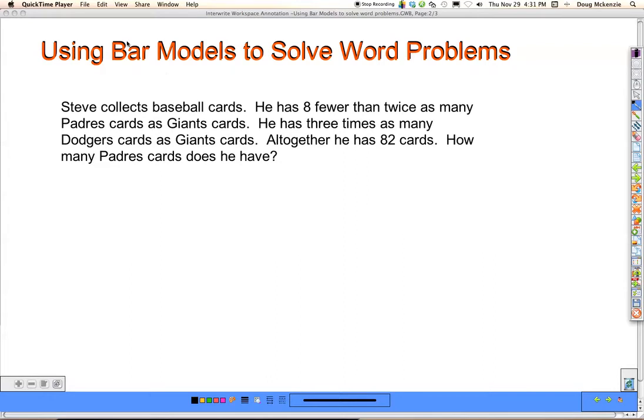Steve collects baseball cards. He has eight fewer than twice as many Padres cards as Giants cards. He has three times as many Dodgers cards as Giants cards. Altogether he has 82 cards. How many Padres cards does he have?